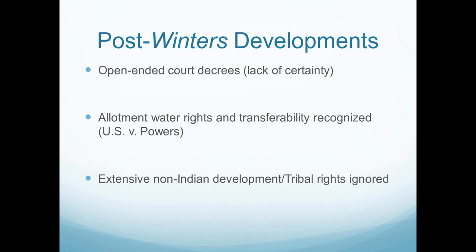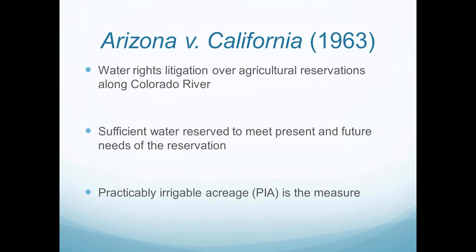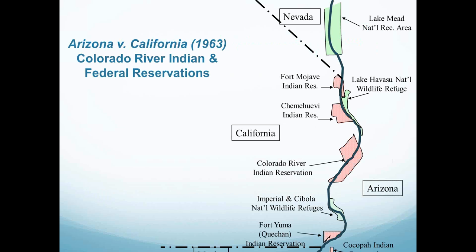The Supreme Court had nothing to say about reserved water rights again in the Indian context until 1963, in Arizona v. California. Arizona v. California dealt with Indian reservations along the Colorado River and also federal reservations. The court was required to divide up all the waters of the Colorado River to determine the final and full entitlement of the tribes. The special master decided that enough water to serve the present and future needs for agricultural reservations would be measured by what he called the PIA — Practically Irrigable Acreage Standard.